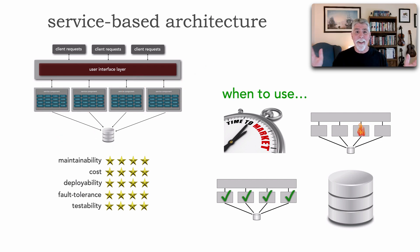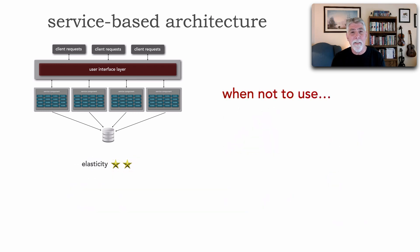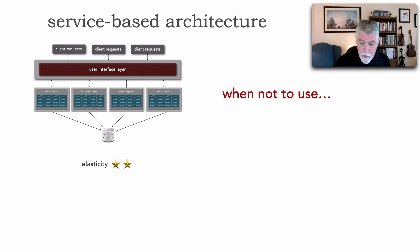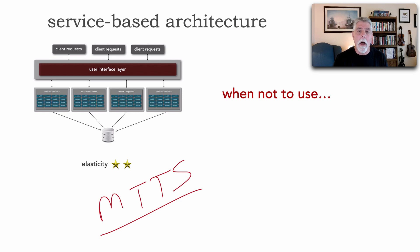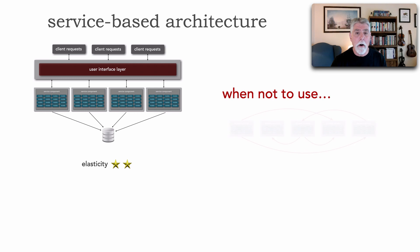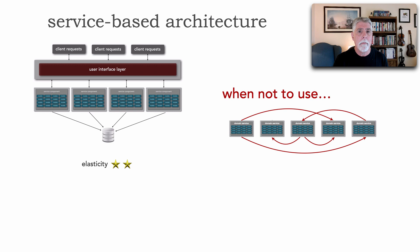This looks like a fantastic architecture, but are there times when we shouldn't use it? There are some cases when we should not use service-based. If we have high elasticity needs, this is not a well-suited architecture due to the coarse-grained nature of the domain services. The mean time to start (MTTS) to respond to immediate high load is just too long — too slow — and that's more suited for microservices. Also, if we have high semantic coupling between our domains, this is not a good architecture style because we'll have too much communication between these coarse-grained domain services, and it ends up looking like a big ball of distributed mud.